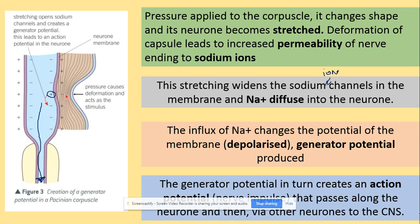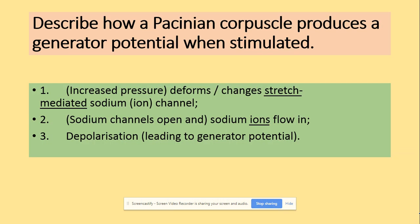Let's have a look at the questions now. Describe how a Pacinian Corpuscle produces a generator potential or action potential when stimulated — only three marks. Increased pressure will deform the stretch-mediated membrane so that the stretch-mediated sodium ion channels will open, and sodium ions will diffuse in — that will lead to depolarization.